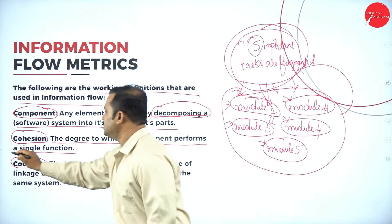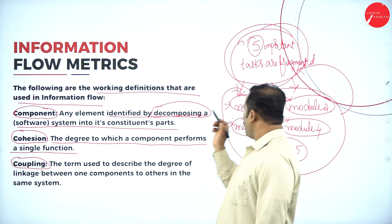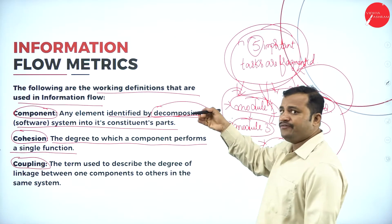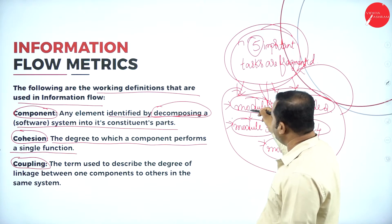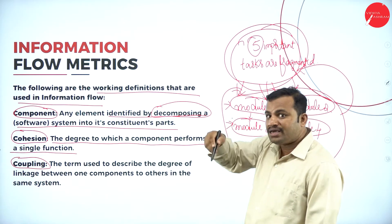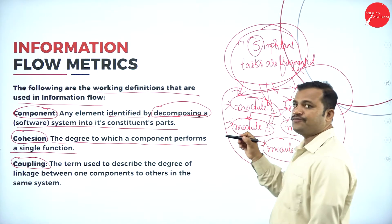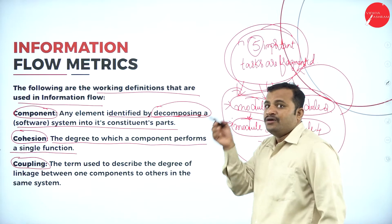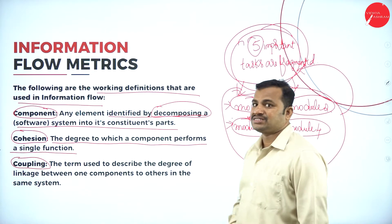What is the meaning of cohesion? It is the degree to which a component performs a single function — the degree of linkage between one module and another. If most information is flowing from module 1 to module 2, there is more bonding or linkage present. If less information flows between module 1 and module 2, then the degree of cohesion between them is less.